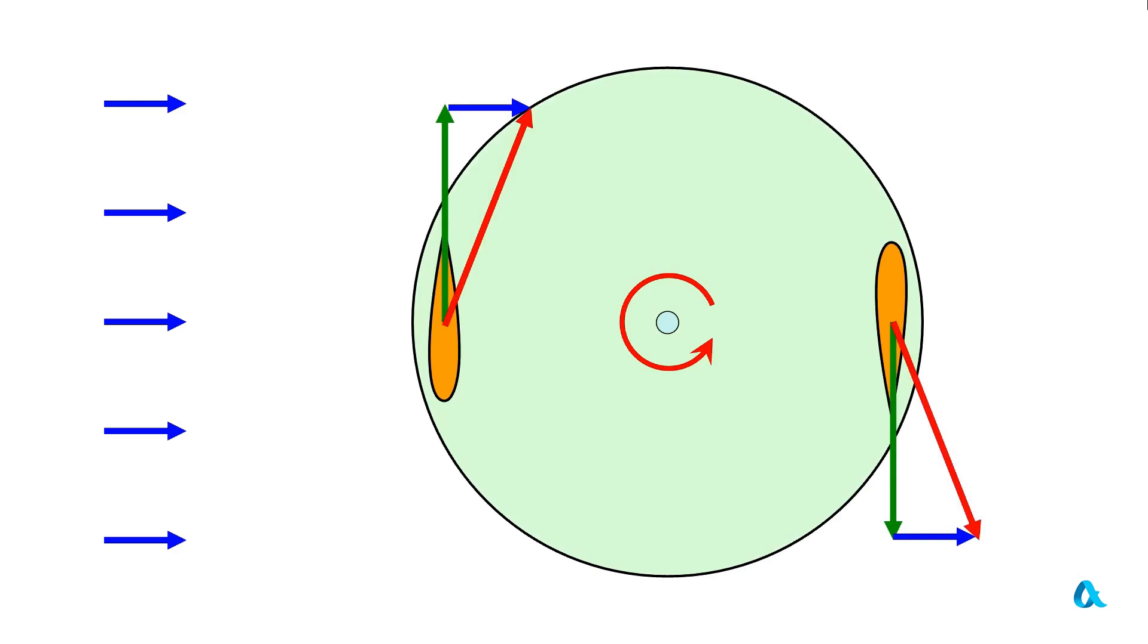Now, the angle of attack is no longer zero. And the blades are subjected to lift forces directed perpendicular to the flow velocity. And we see that these forces, which are responsible for the rotation of the rotor, have components that spin the rotor.